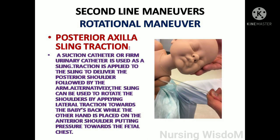Posterior axilla sling traction: a suction catheter or Foley urinary catheter is used as a sling. Traction is applied to the sling to deliver the posterior shoulder followed by the arm. Alternatively, the sling can rotate the shoulders by applying lateral traction towards the baby's back while the other hand on the anterior shoulder applies pressure towards the fetal chest.